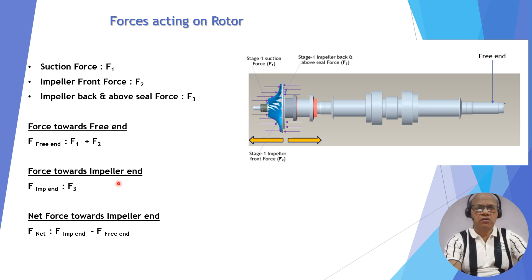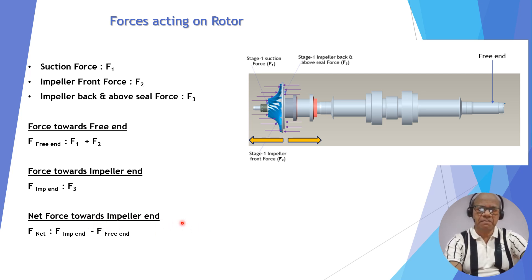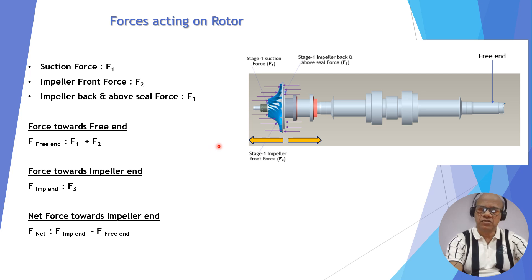To summarize the force balance: forces toward the free end equal F1 plus F2; forces toward the impeller end equal F3. The net force toward the impeller end is F3 minus (F1 + F2). If this net force is positive, the rotor thrusts toward the impeller end; if negative, the rotor thrusts toward the free end. So when F3 is greater than the sum of F1 and F2, the rotor goes to the impeller side; when F3 is smaller, the rotor goes to the free end side.